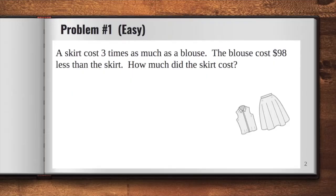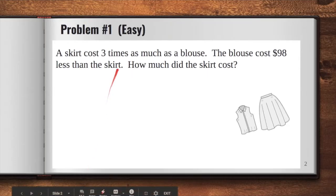A skirt costs three times as much as a blouse. The blouse cost $98 less than the skirt. How much did the skirt cost? First, let's strive to find out which of the two items costs less. And by reading the first statement, we would know that the answer is the blouse.